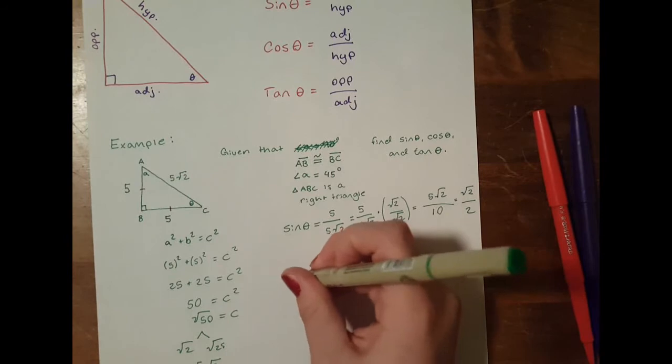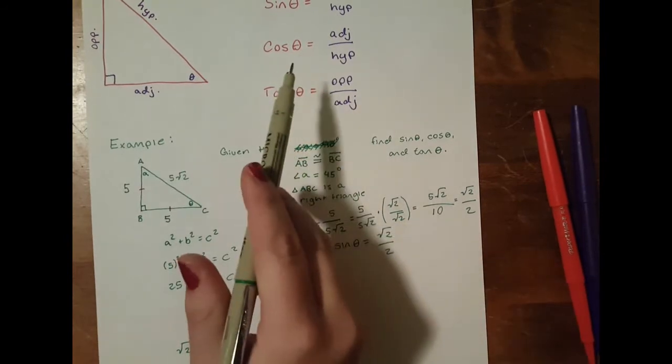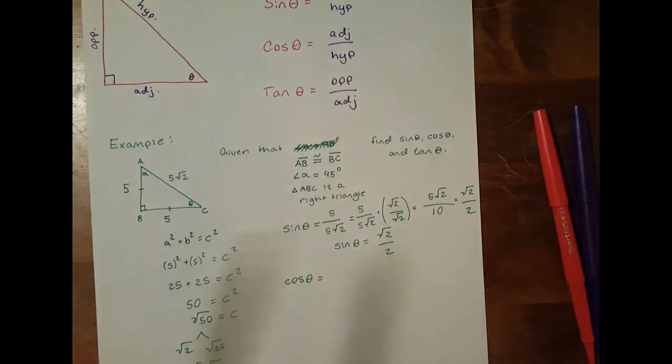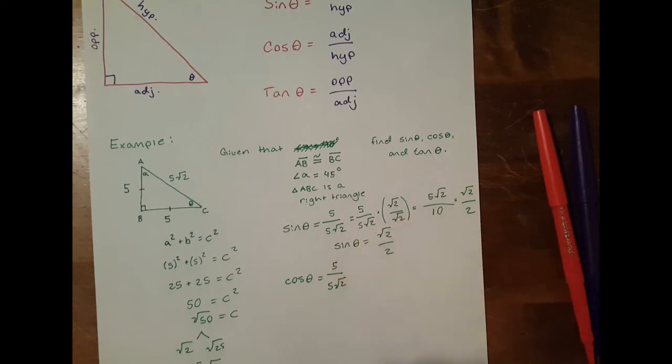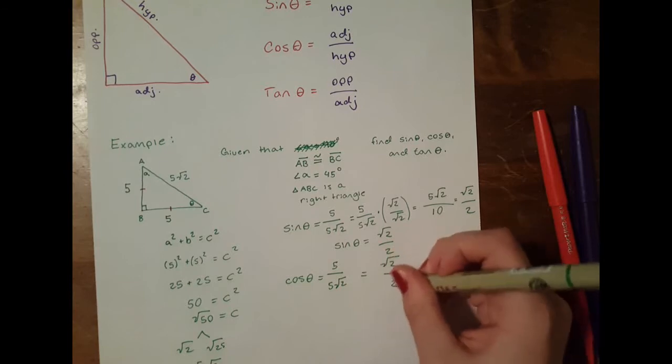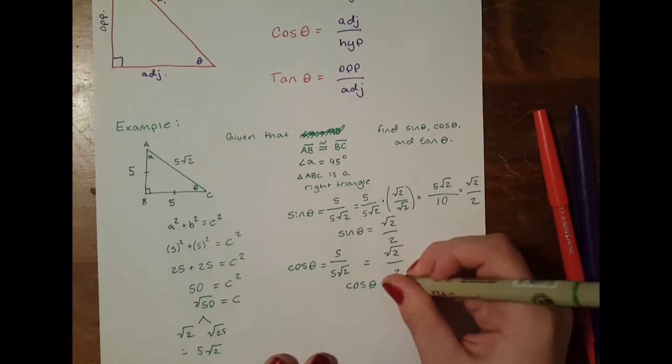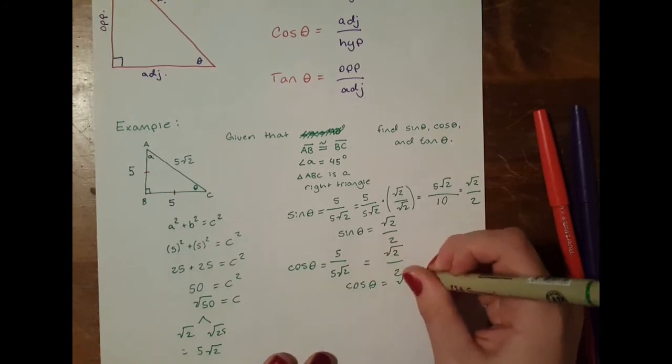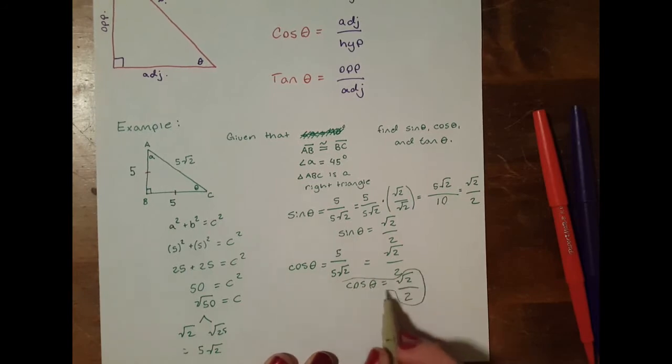Now the cosine of theta, we want to know what that equals. Well, we know that the cosine of theta is adjacent over hypotenuse. So in relation to theta, your adjacent side is 5 and your hypotenuse is 5 root 2. So the cosine of theta is 5 over 5 root 2, and since that's the same as sine, we can say that also equals root 2 over 2. So the cosine of theta also equals root 2 over 2.